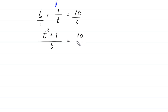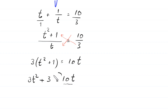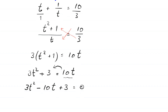Using cross multiplication, 3 times (t² + 1) equals 10 times t. Expanding: 3t² + 3 equals 10t. Moving 10t to the left-hand side gives 3t² minus 10t plus 3 equals 0.